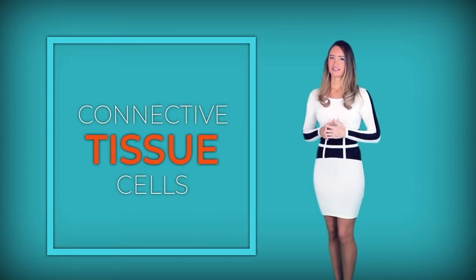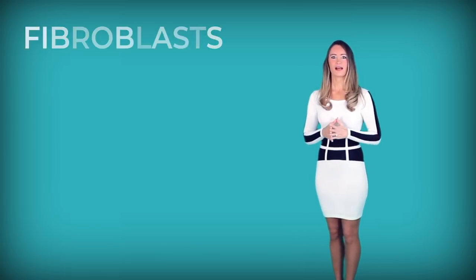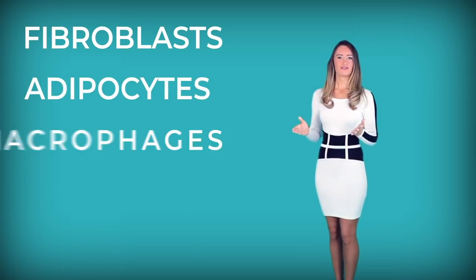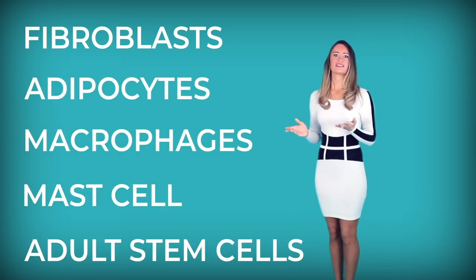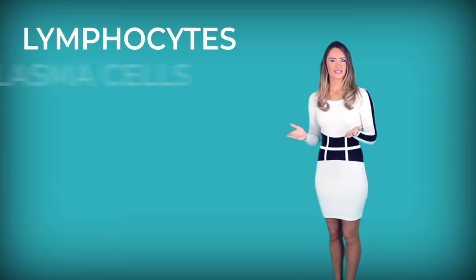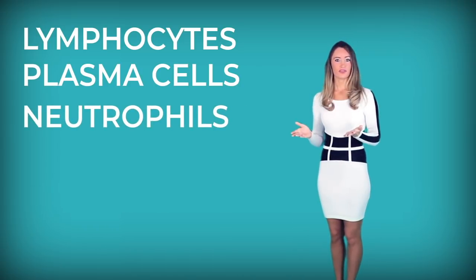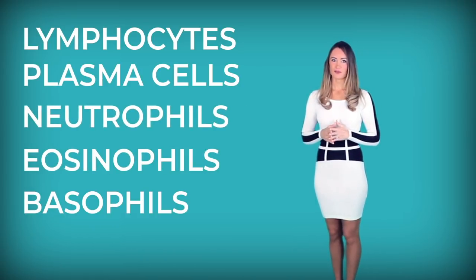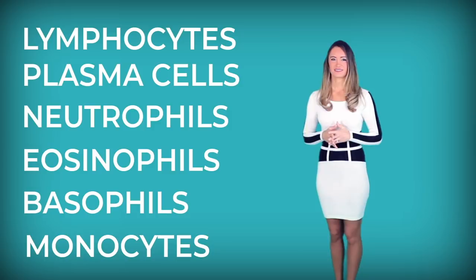There are two types of connective tissue cells: those which reside in the tissue and those that wander. The resident cell population includes fibroblasts, adipocytes, macrophages, mast cells, and adult stem cells. The wandering, or transient, cell population includes lymphocytes, plasma cells, neutrophils, eosinophils, basophils, and monocytes. Let's go through each of these one by one.